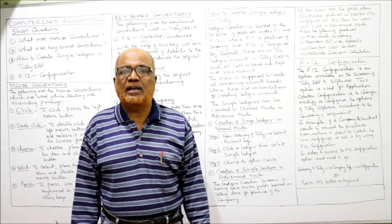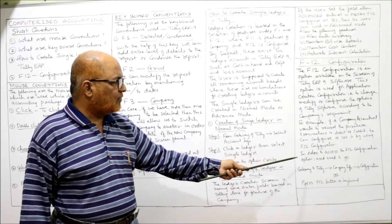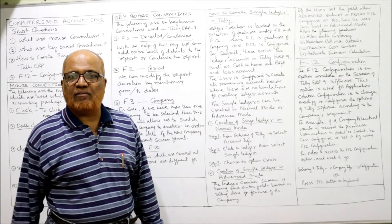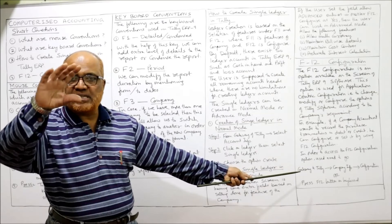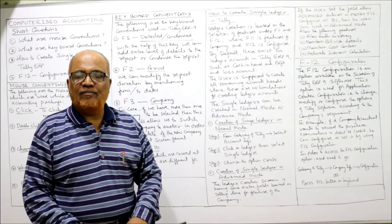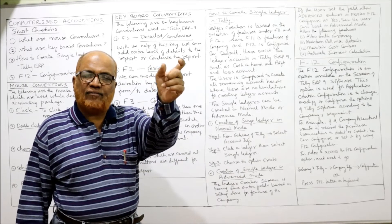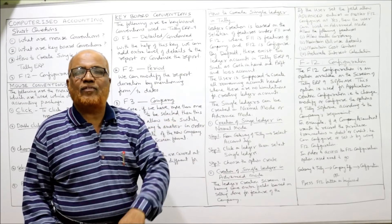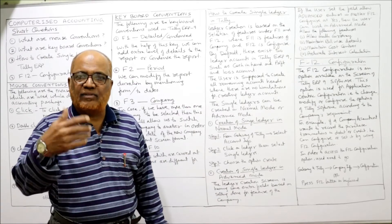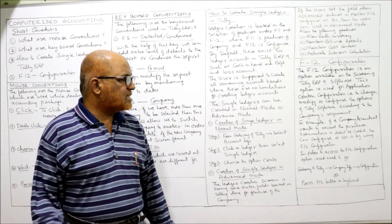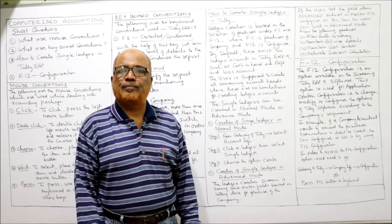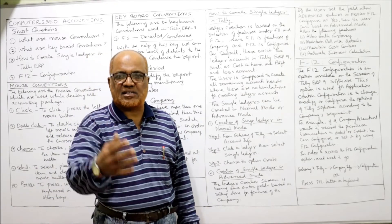To access the F12 configuration option, two methods are available. First, from the Gateway of Tally, select Company Info, then select Configuration. Second, from Gateway of Tally, go to Account Info and click Configuration. Alternatively, the shortcut method is to simply press the F12 button — pressing F12 will directly open the configuration screen and give you access to all configuration options.